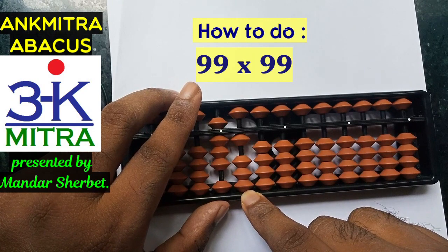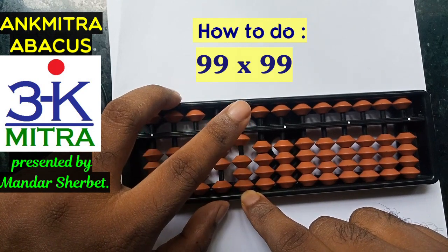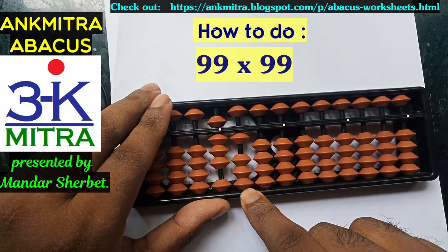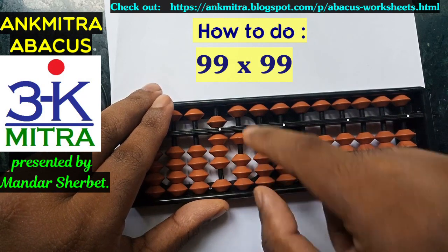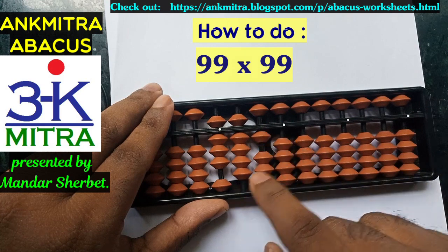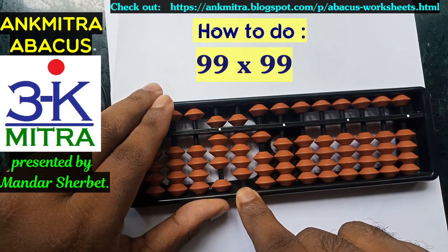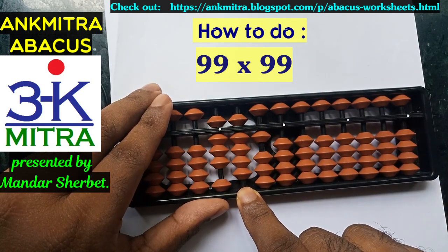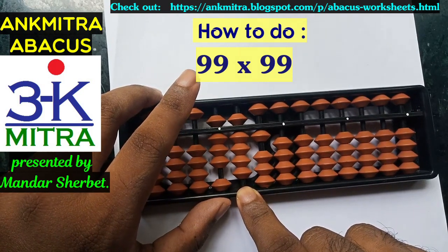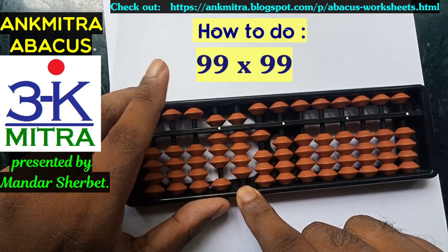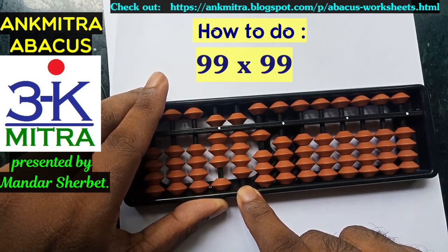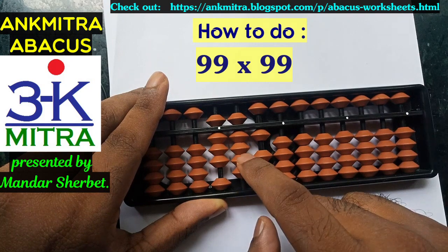We multiply the tens place nine of the first number by the units place nine of the second number — it's again 81 — so we add 81 from the third rod. Then we multiply the units place nine of the first number with the tens place nine of the second number, and it is again 81, so we add 81 from the third rod.